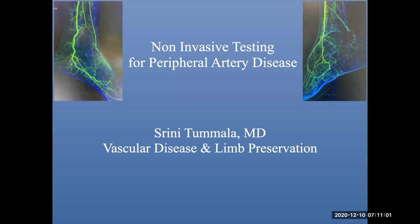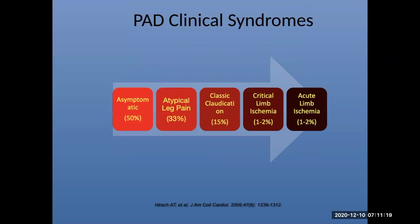Non-invasive testing encompasses the full spectrum from arterial all the way to venous disease, whether superficial or deep venous. It can also encompass carotids, transcranial Doppler, abdominal aortic aneurysms, mesenteric disease, renal disease, and you could even throw in TIPS into that category as well. Today we're going to focus really on peripheral arterial disease and non-invasive testing for that.